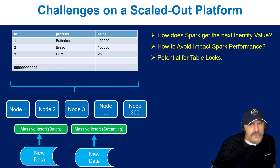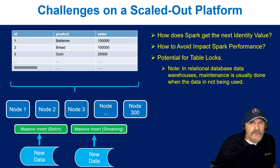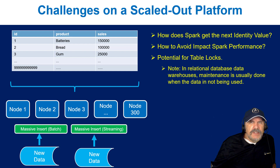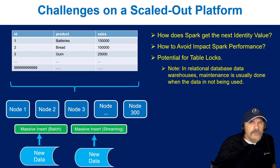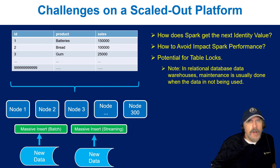In your traditional relational database world, data warehouse loads were typically done in a batch window — overnight, when people were generally not using the data warehouse. Each table would probably have only one source coming into it at a time, before streaming sources complicated everything. It was a simpler world, and identity columns worked really well in that context.